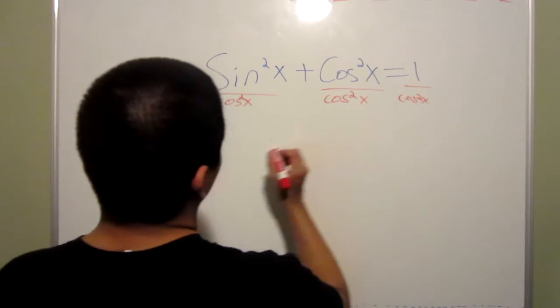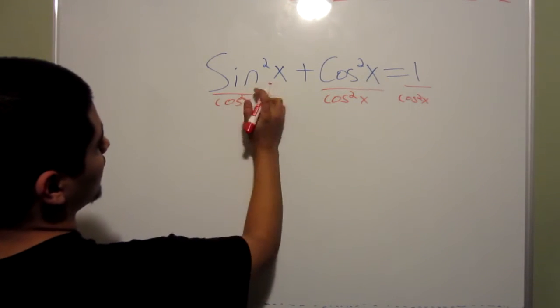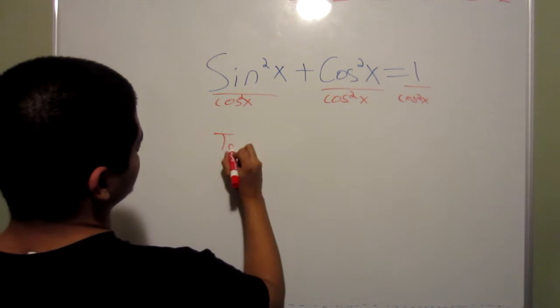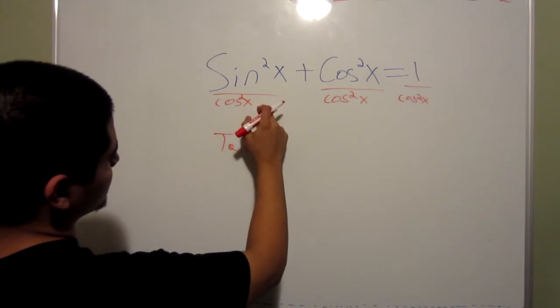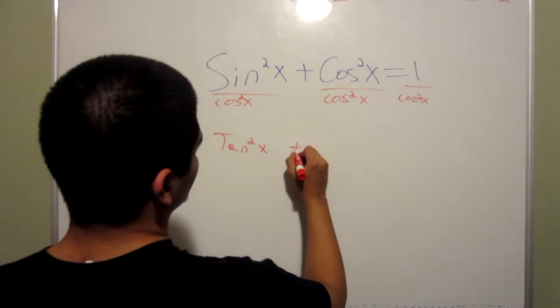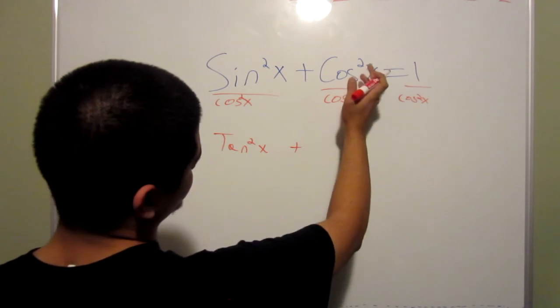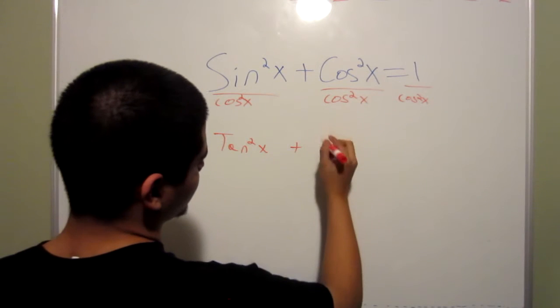You would get tangent squared x, because tangent is the same thing as sine over cosine, plus cosine divided by cosine, or cosine squared x, divided by cosine squared x.